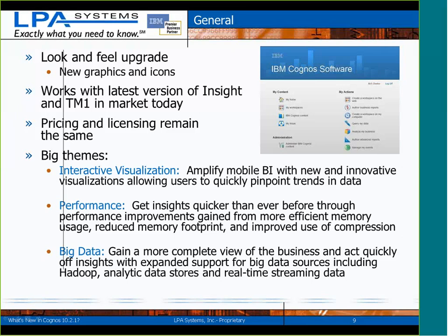Three big themes as far as the marketing part of the 10.2.1 rollout. First, interactive visualization — this has to do with something called the RAVE engine, R-A-V-E. We'll talk more about that when we cover the changes to active reports, because in this release it's the first release that includes RAVE, and the components that include RAVE are active reports. This is the first of many releases that will incorporate visualizations throughout the BI product. Performance — lots of great performance improvements. We'll talk through the specifics and the benchmarks that IBM has published.